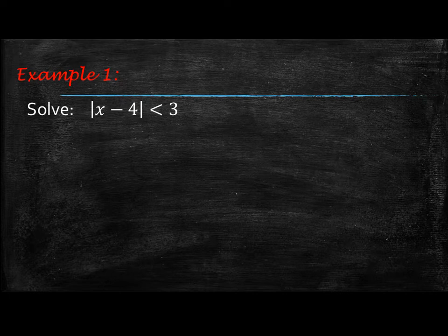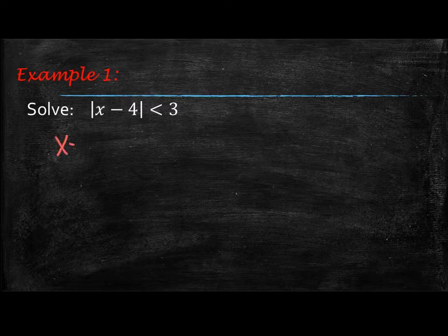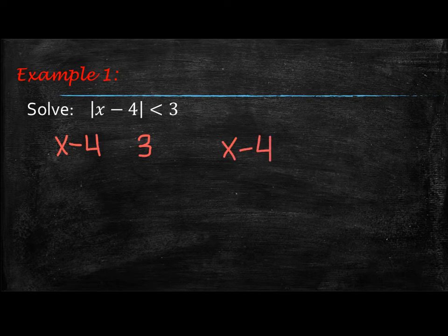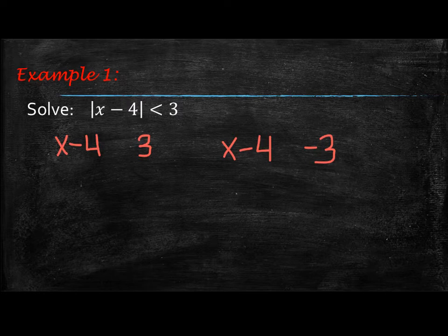The next point is you want to set it equal to the positive and the negative. We're still going to take the inside, x minus 4, and set it to positive 3, and also use negative 3. When you change it to an opposite sign in an inequality, when it stays 3 you still use that less than symbol.